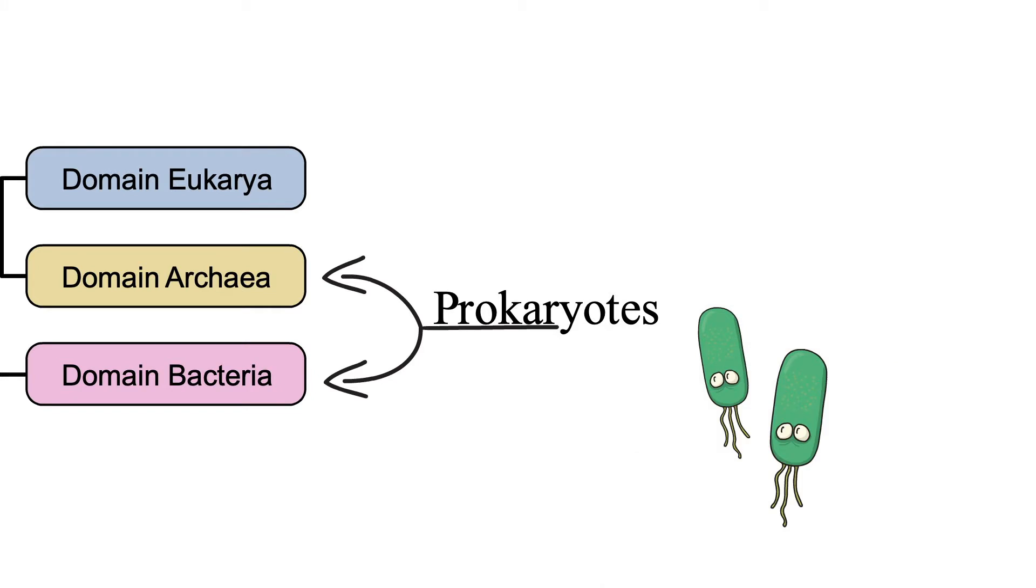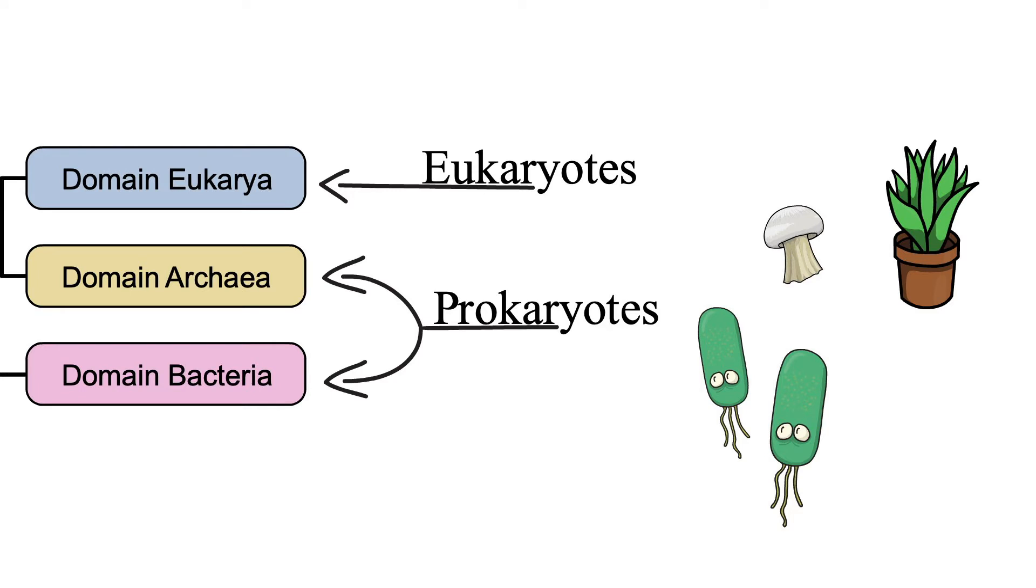Prokaryotes are unicellular or single-celled organisms. In contrast, eukaryotes belong to domain eukaryota, which includes protists, plants, animals, and fungi. They can be both unicellular as well as multicellular.